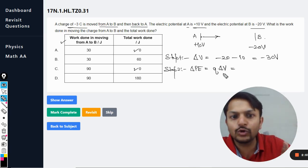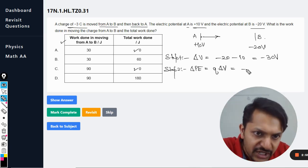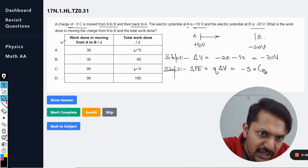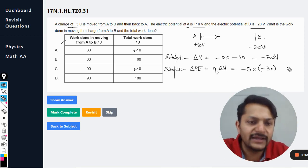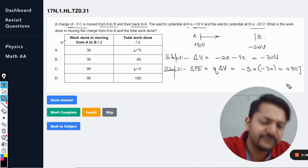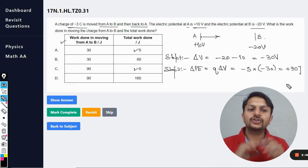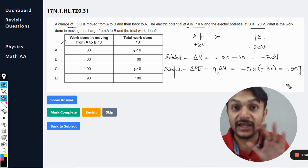And there you have the total change in potential energy. So it is -3 multiply by -30, so it comes out to be positive 90 joules. So this is the total change in the potential energy of the system.